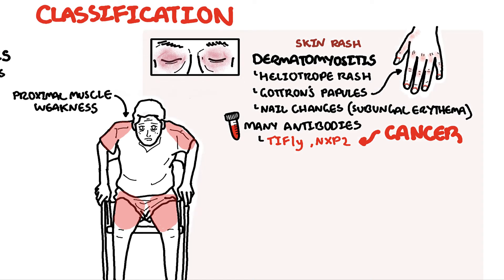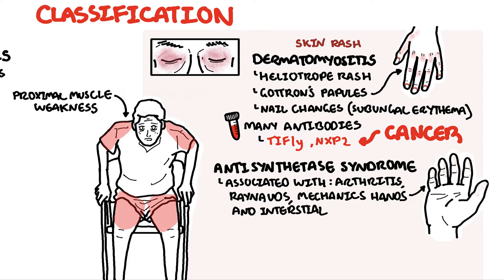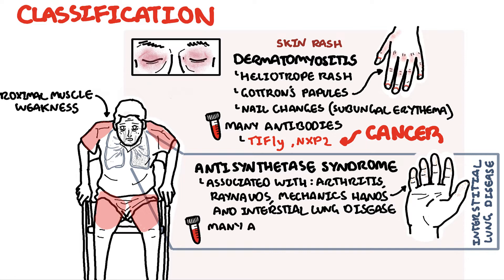Two other types of autoimmune inflammatory myopathies are associated with skin changes. The first is antisynthetase syndrome, a unique syndrome presenting with proximal muscle weakness, inflammatory arthritis, Raynaud's phenomenon — discoloration of the fingers especially during cold weather — mechanic's hands, which are roughening of the palmar aspect of the hand, and interstitial lung disease. Antisynthetase syndrome can also have features of dermatomyositis. There are specific antisynthetase syndrome antibodies; JO-1 is the most common.